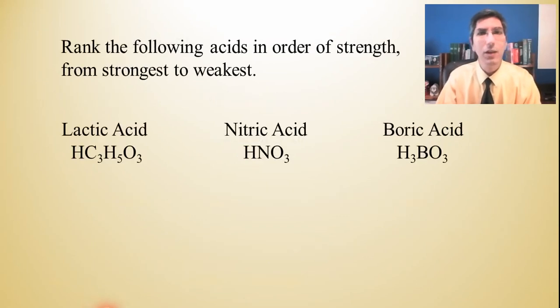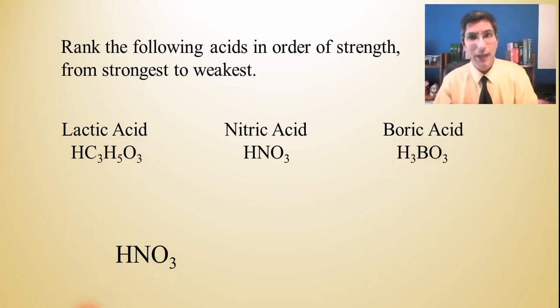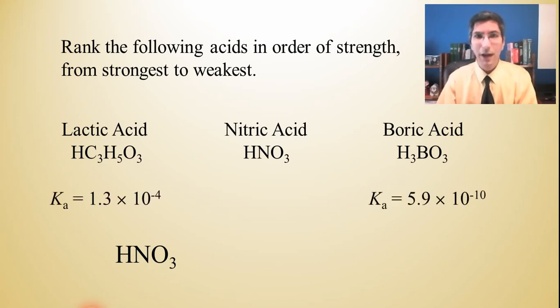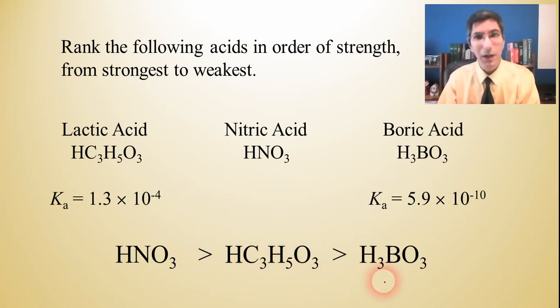So let's try an example problem here. Let's rank these three acids in order of strength from strongest to weakest. Now as you look at these three acids, I hope you can tell that one of them is a strong acid. It's one of our big six that we learned earlier in this course and that we repeated in this video, right? Nitric should jump out at us as being a strong acid. So that's the strongest. Now for these other two, lactic and boric, we're going to need some Ka values to decide. So let's put those up here. And from those Ka values, can you see which one of the two is stronger? I hope you can see that the lactic acid has a larger value of Ka, a much larger value. In fact, like a million times larger. So lactic acid is going to be stronger and boric acid would be the weakest of those three acids.